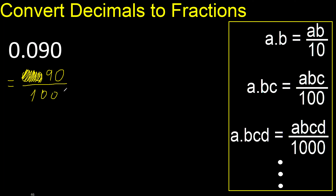One, two, three. The last digit is zero, therefore eliminate. Always with zero. Finish, because nine and one hundred cannot be simplified — they cannot be divided by the same number. Finish.